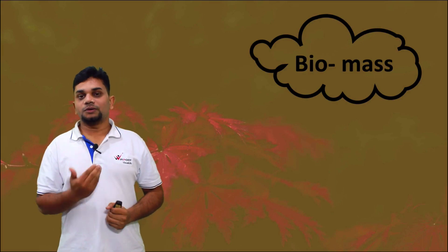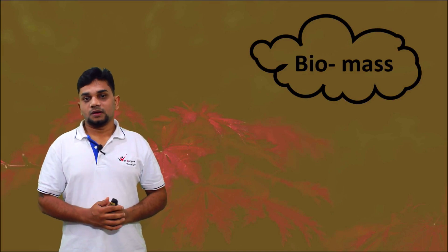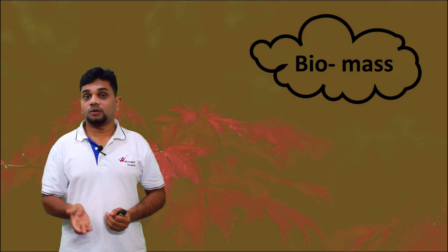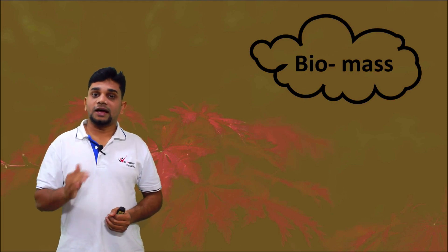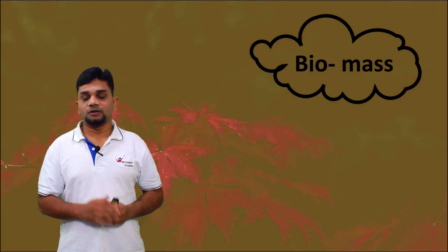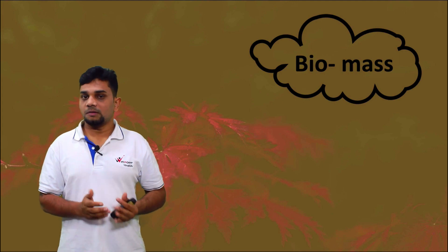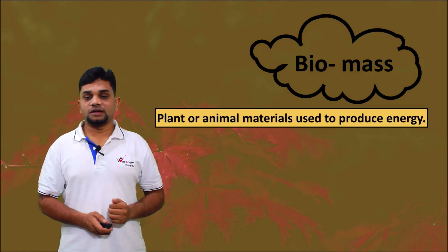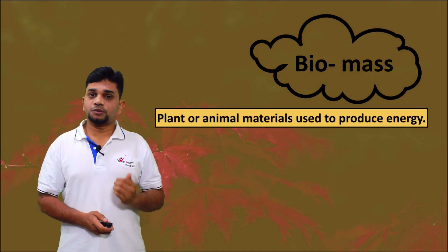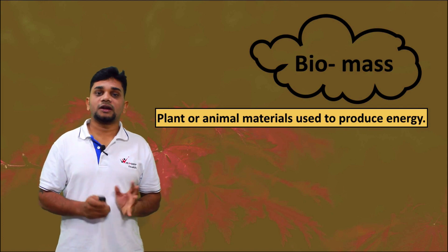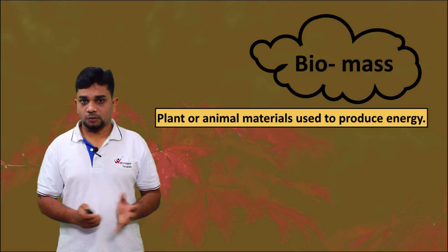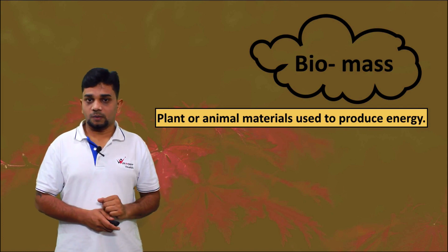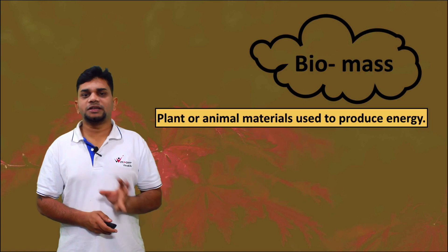We are going to discuss biomass. We can use plants and animal materials to produce energy — this is called biomass. Plant or animal materials used to produce energy are known as biomass.